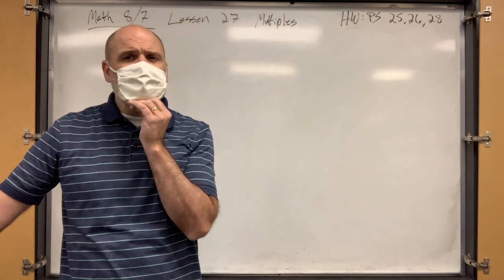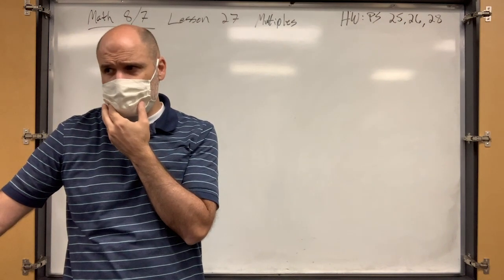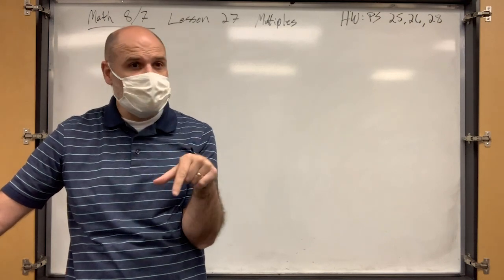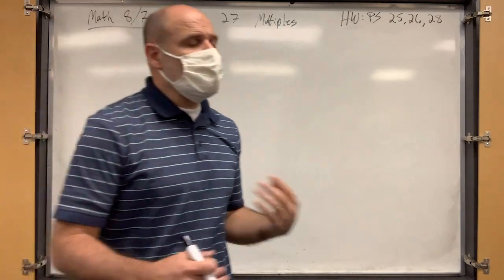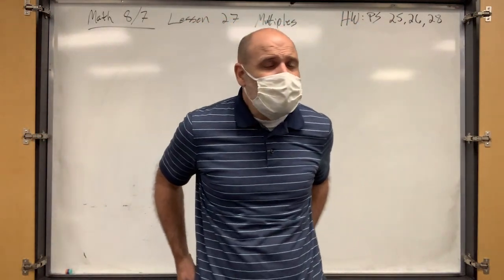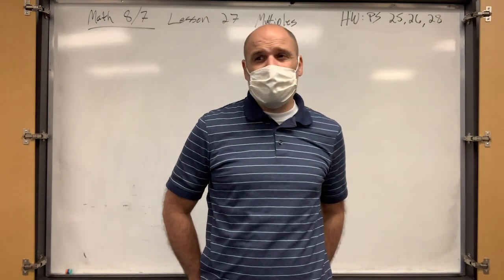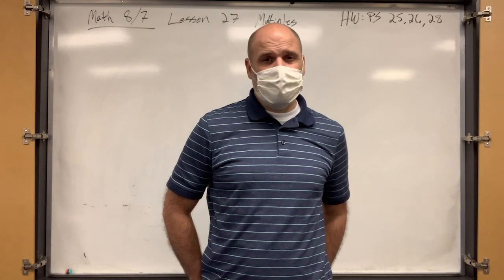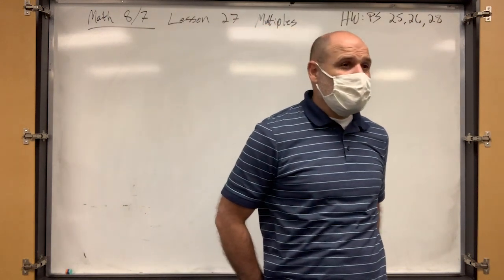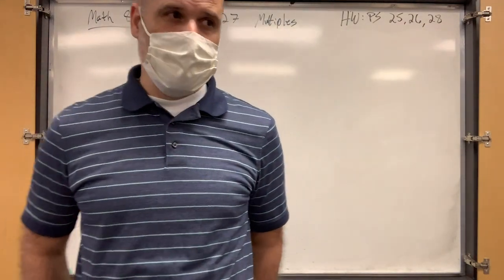Now, what about the least common multiple of 8 and 6? Anyone know that? Grace? 24. That's right. So you have to think about that a little bit longer — that's what we're going to talk about today. But would I ever ask you what the least common factor of 8 and 6 is? What's the least common factor of any two numbers? 1. It'll always be 1, so I'll never ask you that.